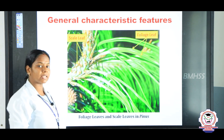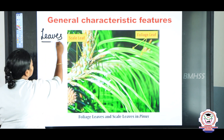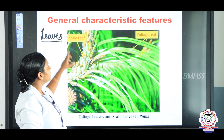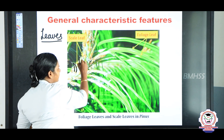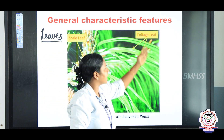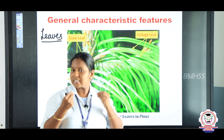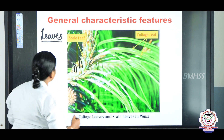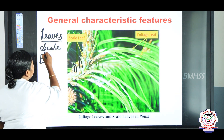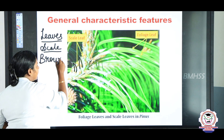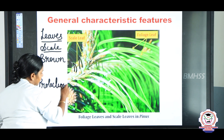The next characteristic we are going to discuss is about the leaves. The leaves are of two types. For example, in this Pinus plant you can see two types of leaves. One is scale leaves — these brown-shaped structures — we say scale leaves. And the green structures we say foliage leaves. Scale leaves are brown in color and their main function is protection.